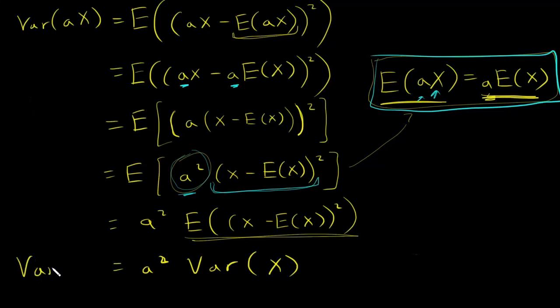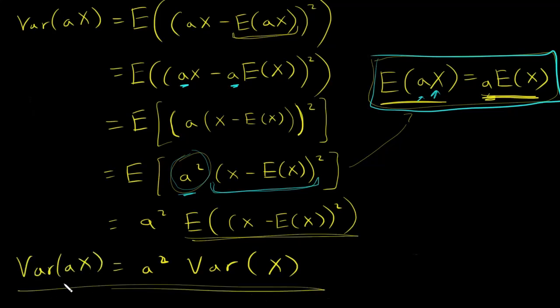So I've shown — I've proved this relationship is true. The variance of ax is a squared times the variance of x.